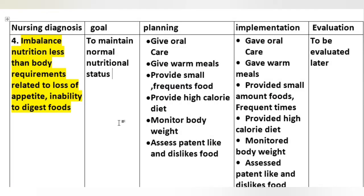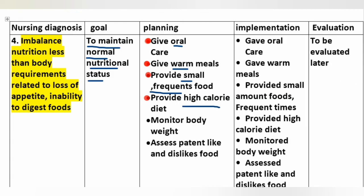Imbalanced nutrition less than body requirements related to loss of appetite and inability to digest foods. Goal: to maintain normal nutritional status. Planning: give oral care, give warm meals, provide small amounts of food at frequent intervals, provide high-calorie diet, monitor body weight, and assess patient food likes and dislikes.